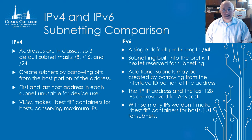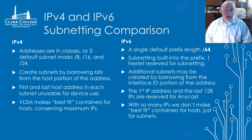In IPv6, we have a single default prefix of slash 64. Subnetting is built into the prefix, so there's no need to borrow bits from the host portion — now called the interface ID. We have a single hex tet, 16 bits, reserved specifically for subnetting. If you needed to subnet further, you are allowed to borrow bits from the interface ID portion of the IP address from the left, just as you do in IPv4.